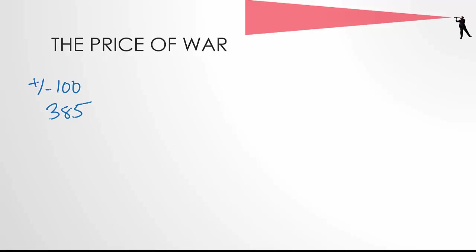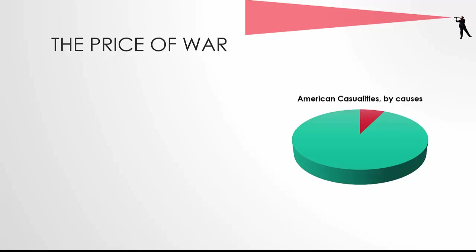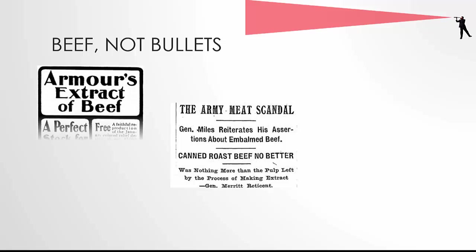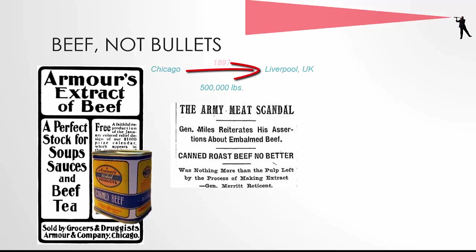Sadly, bullets were not the most deadly risk in this war. According to some sources, there were 5,462 American deaths during the war. 385 American soldiers died in combat or from wounds, while almost 5,000 more men died from disease or other causes — 93% of the deaths were not combat related. One possible source was American beef being supplied to the U.S. Army. In May of 1898, Armour & Company, a big meatpacking company out of Chicago, sold the Army 500,000 pounds of canned beef which had been sent to Liverpool a year before and returned.